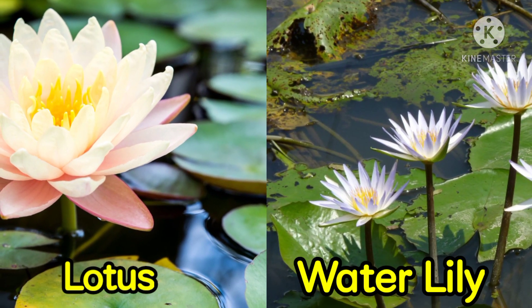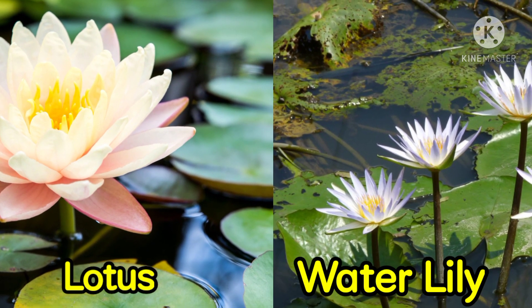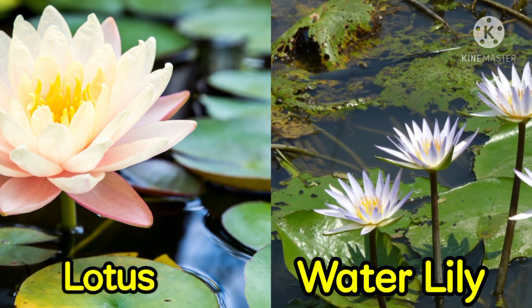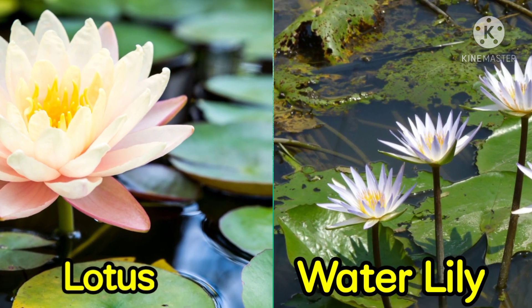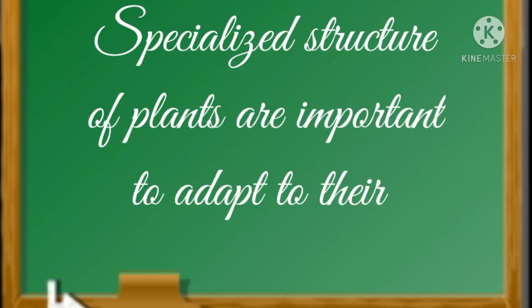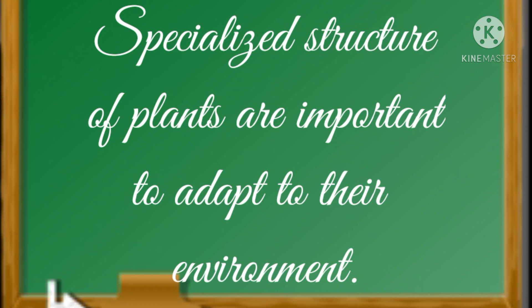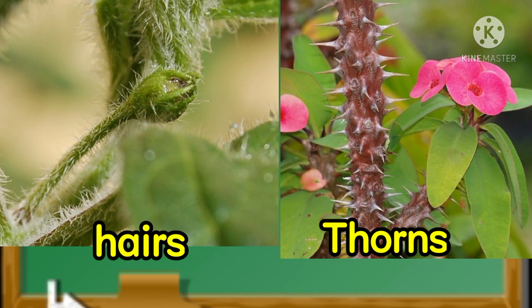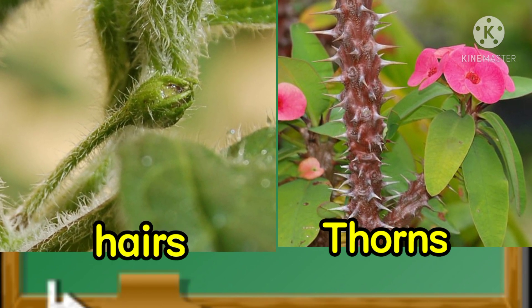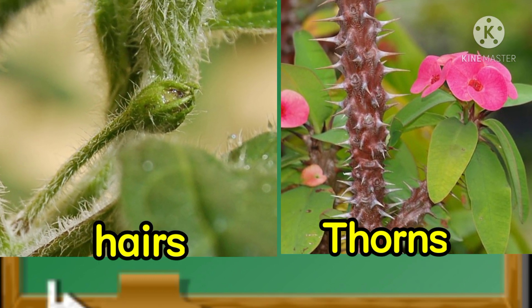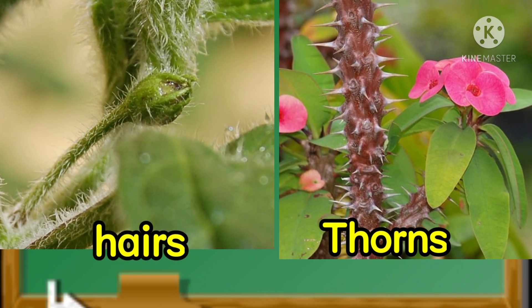Lotus and water lily float in water. The leaves of water lily are wide and thick, while lotus leaves are flat and broad. These structures help them float in water. Specialized structures of plants are important to help them adapt to their environment. Thorns and hairs are some specialized structures of plants — not all plants have them, but they protect plants from animals.